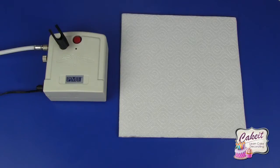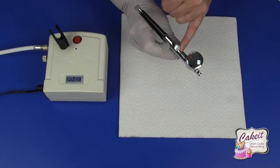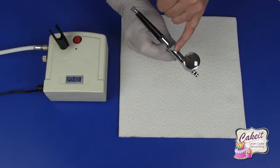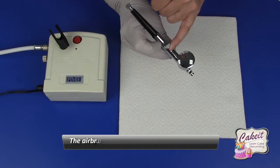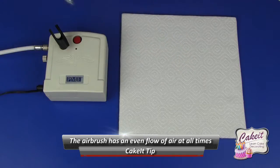I'm going to switch the airbrush on and then vary the distance from my work and also vary the pull on the lever to control the airflow. It's a good idea to practice on a piece of paper towel or card before you actually begin work on your cake.